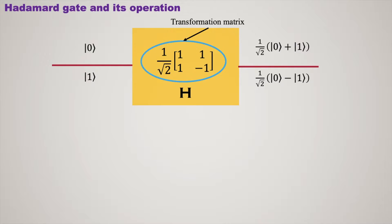The Hadamard gate is a single qubit quantum gate. Here I am showing you a Hadamard gate with its transformation matrix. This gate creates superposition of two states — that is, if we apply the Hadamard operation on either ket 0 or ket 1, it creates a superposition of ket 0 and ket 1.